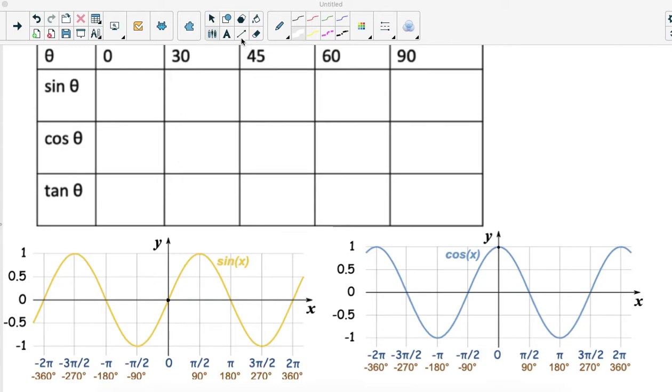At IB and A level you need to know certain angles and exact trig ratios. Those angles are, working in degrees: zero degrees, 30 degrees, 45 degrees, 60 degrees, and 90 degrees.